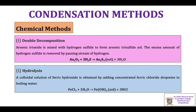Next come chemical methods. The first is double decomposition. Arsenic trioxide is mixed with hydrogen sulfide to form arsenic tri-sulphide sol, and the excess amount of hydrogen sulfide is removed by passing a stream of hydrogen or carbon dioxide. The reactants arsenic oxide and hydrogen sulfide result in the formation of the arsenic tri-sulphide sol in water — the dispersed phase and dispersion medium are obtained as products.